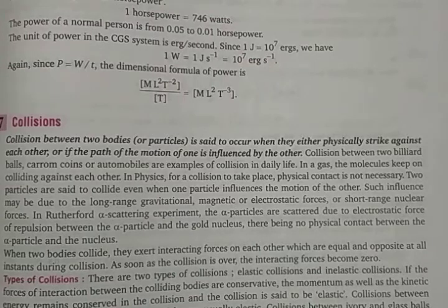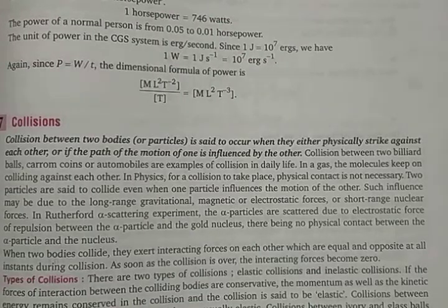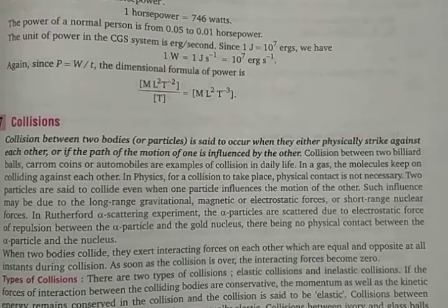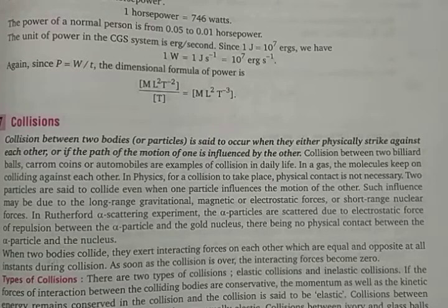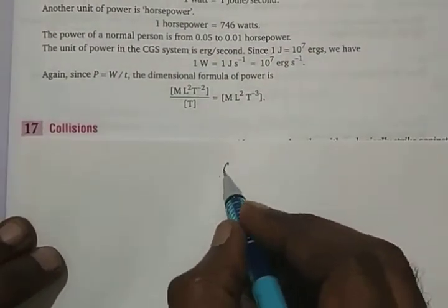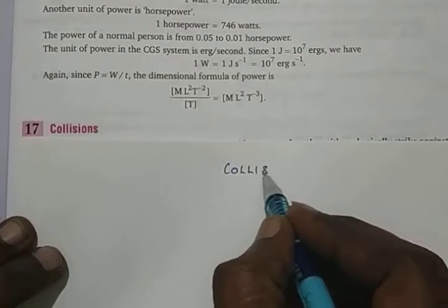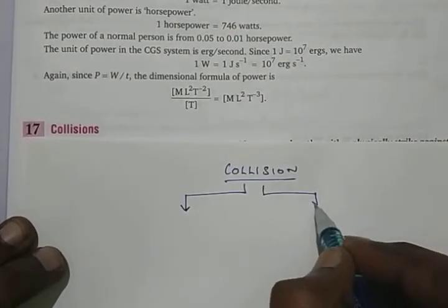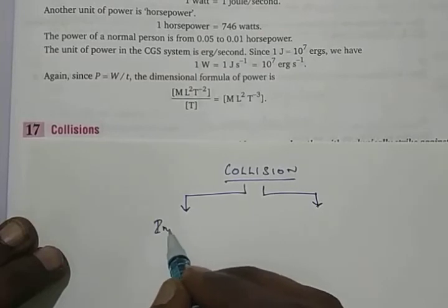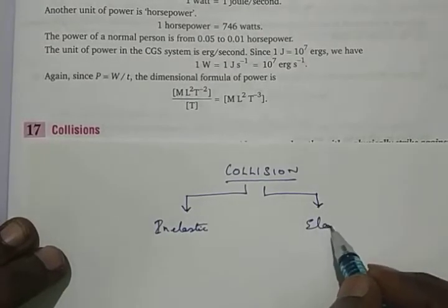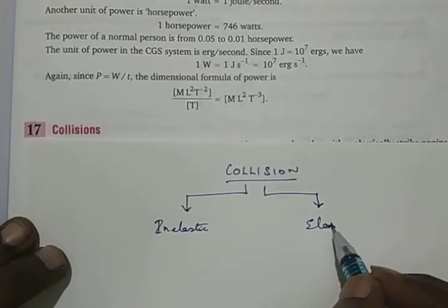So what is a collision? Whenever two bodies collide with each other — when they strike on each other — that is called a collision. Collisions can be of two types: one is called inelastic collision, and the next one is called elastic collision.